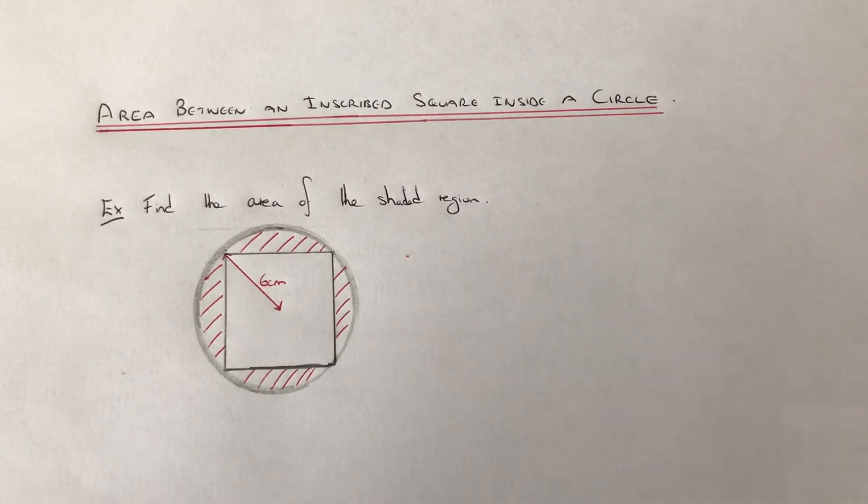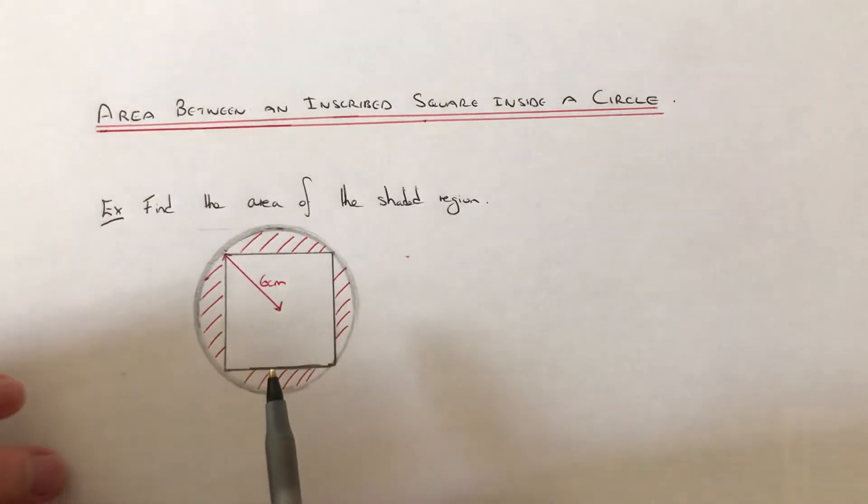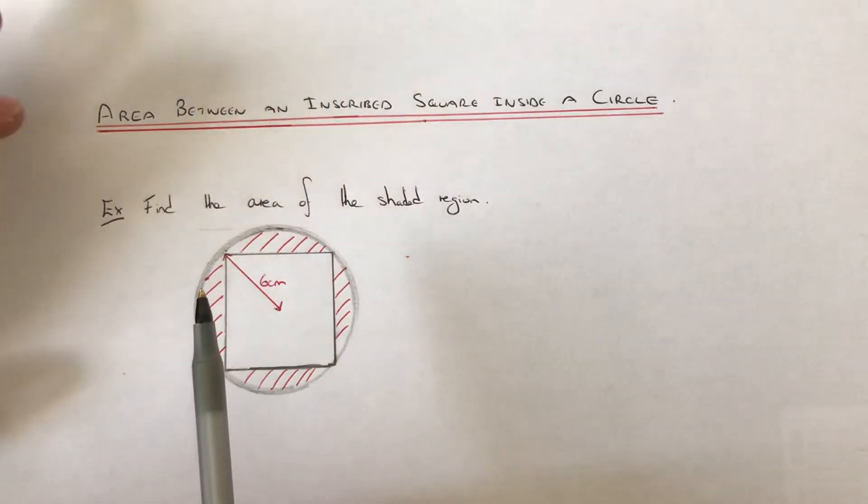Hi guys, welcome back. This is Maths 3000. Today I'm going to show you how to work out the area between an inscribed square inside a circle. So we're trying to find this shaded area here.